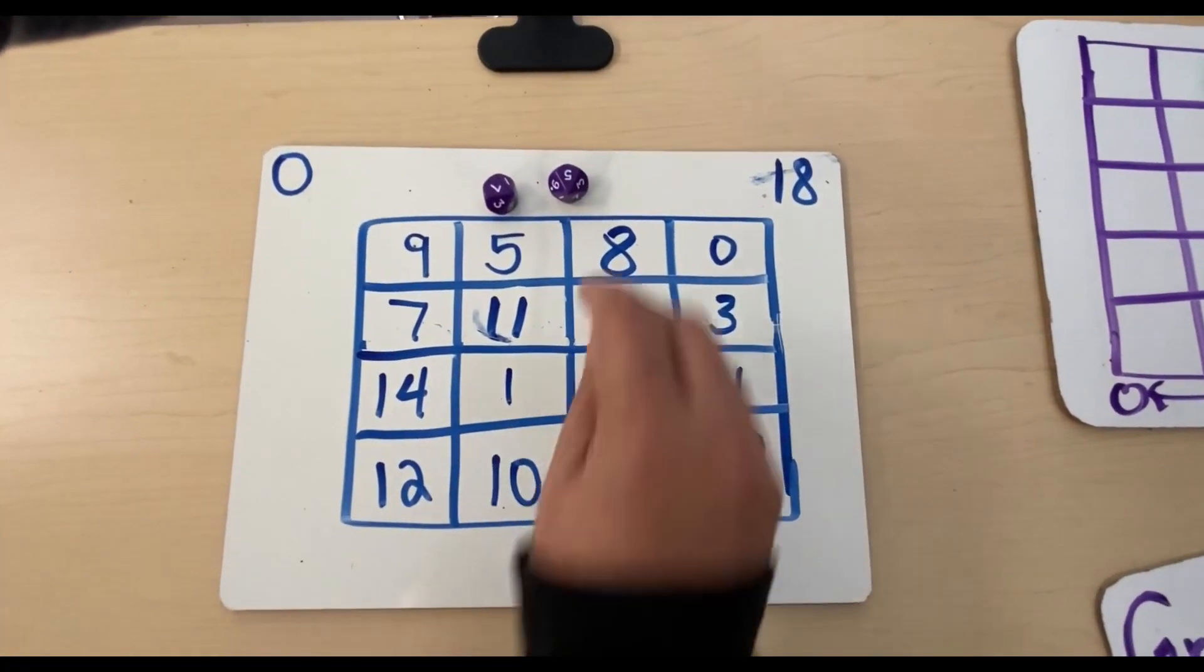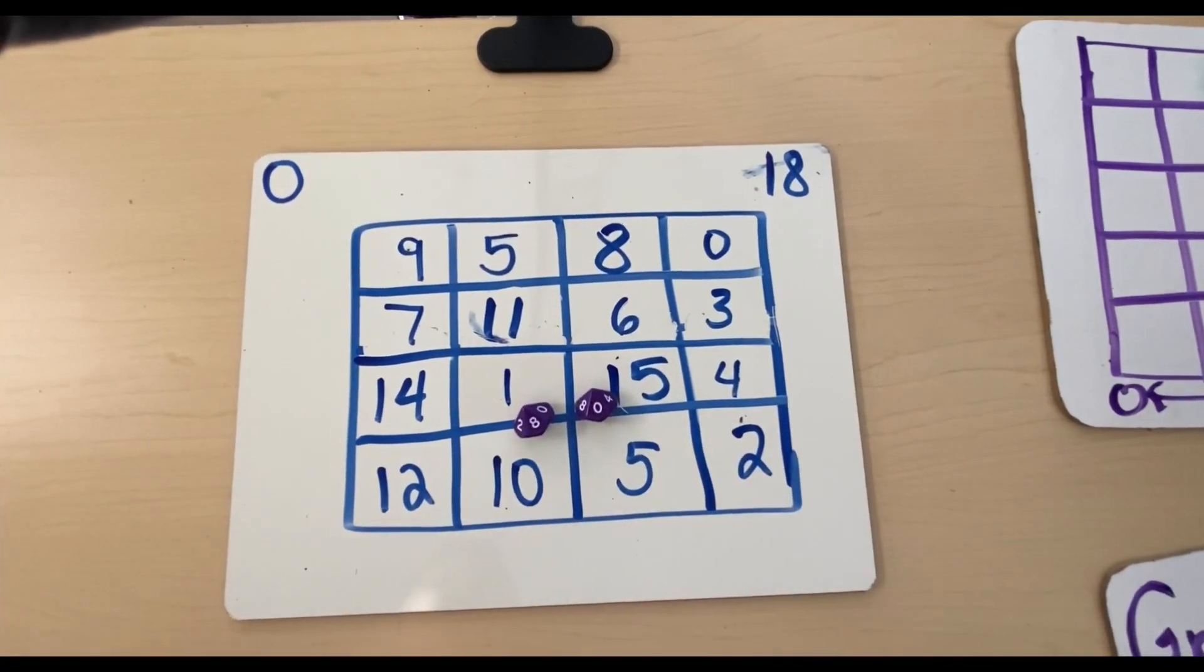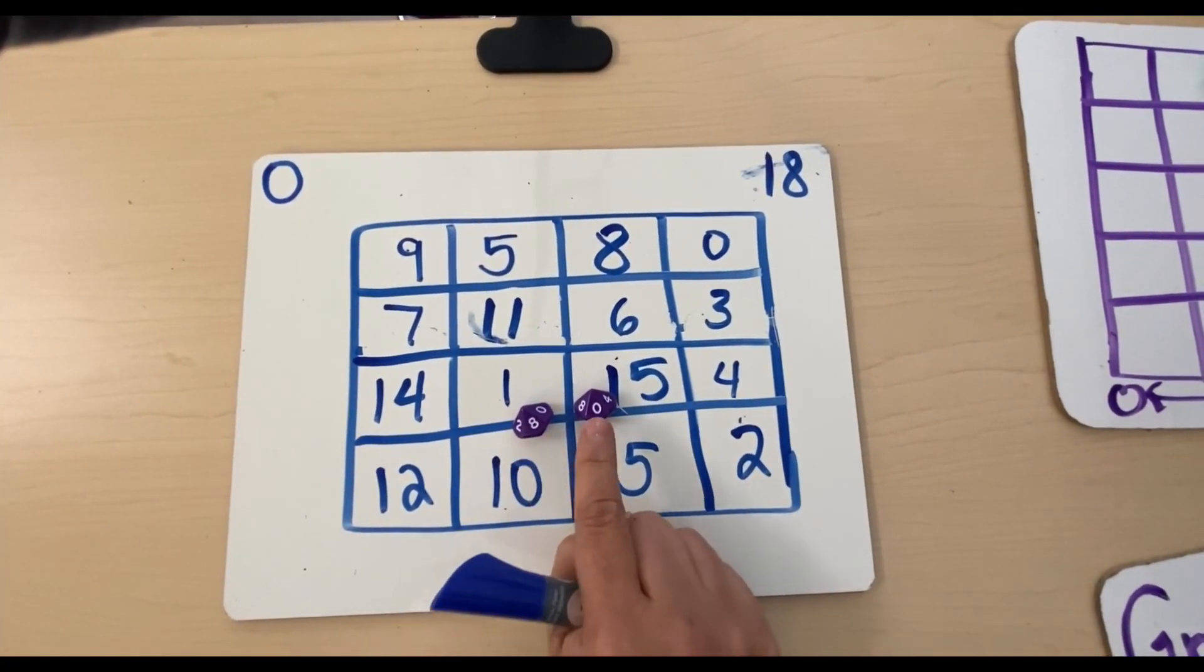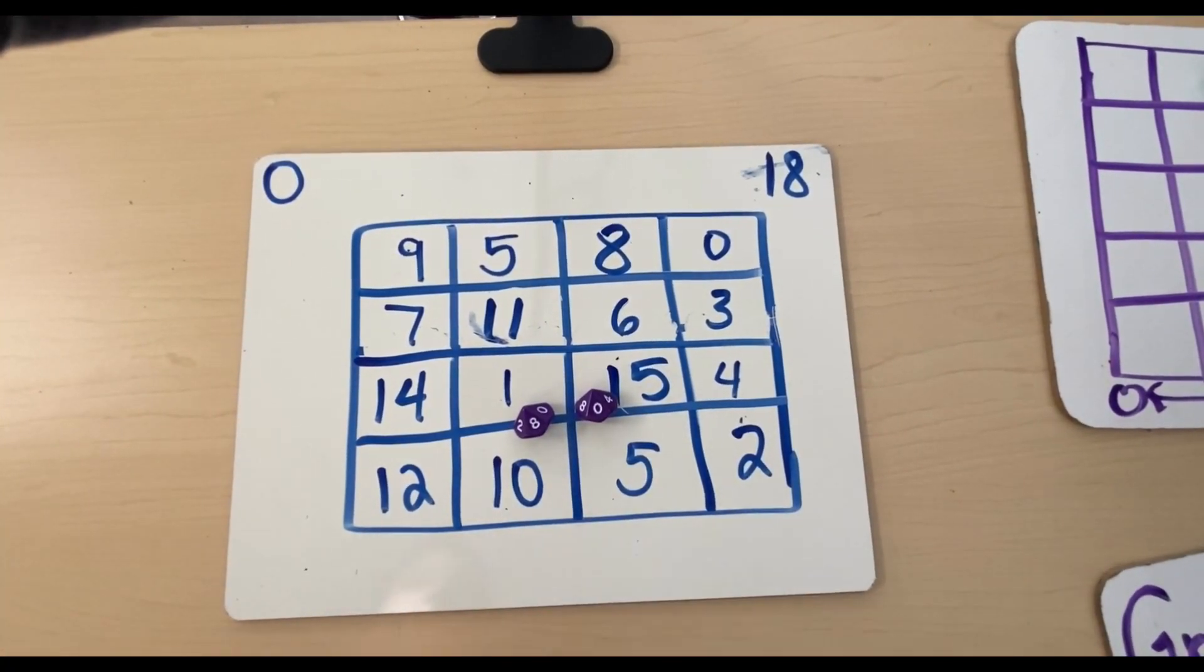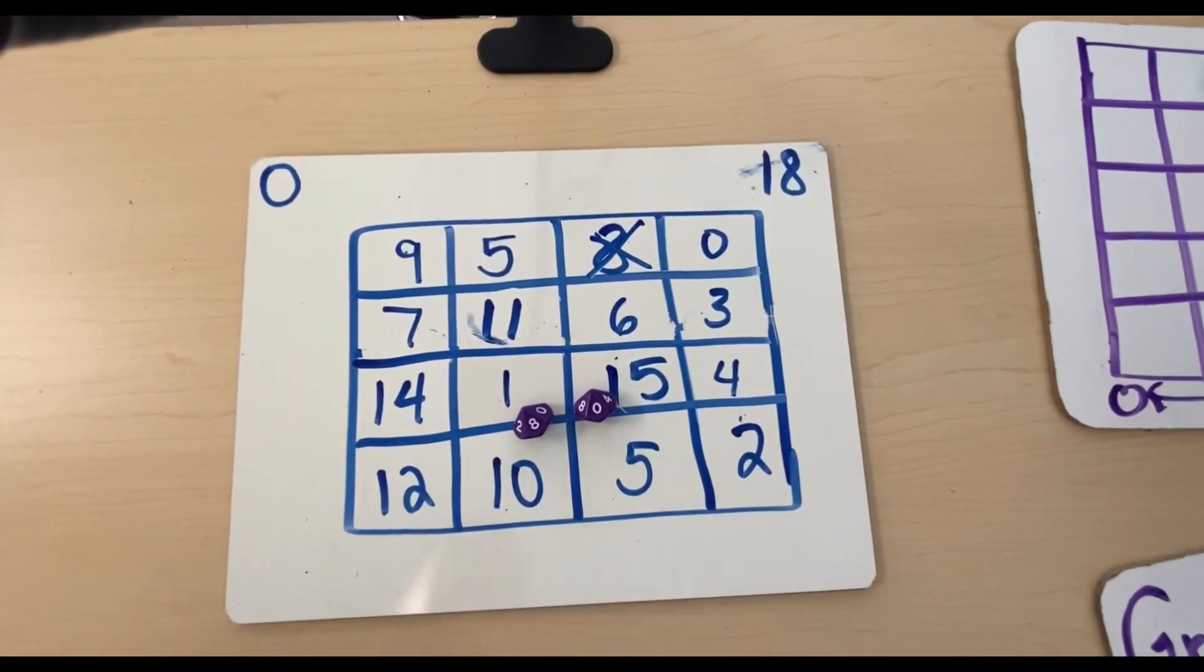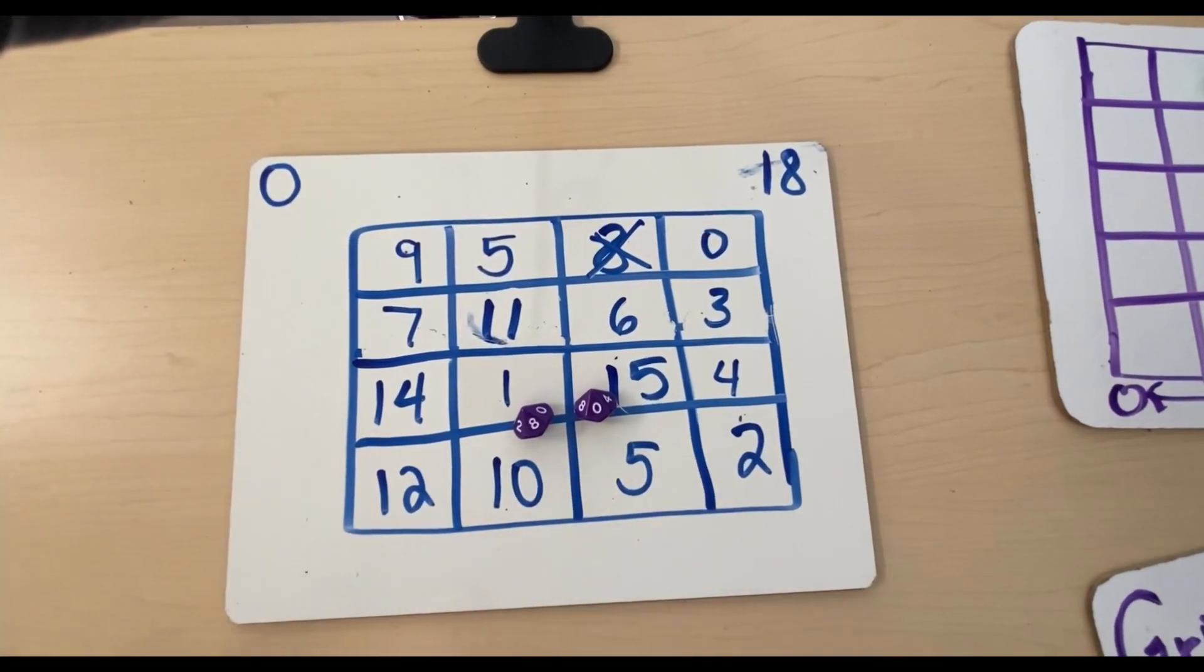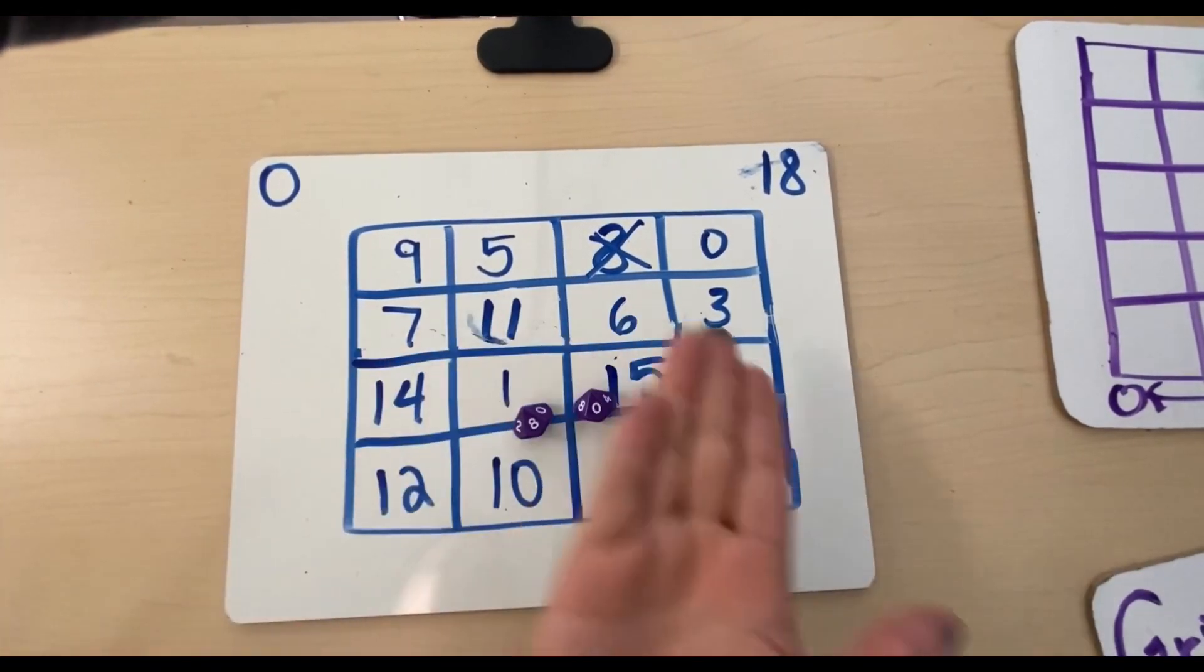All right, so what we do is we're going to roll the dice. We're going to add them together, so eight plus zero is eight, so I'm going to find an eight on my grid. But I'm also going to take away. So eight minus zero is still eight. Oh boy, I don't have another eight, so I don't go.